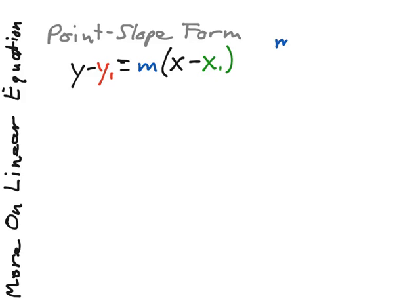y minus y₁ equals m times x minus x₁. Where in this form, we have a slope that is provided or found as m, and it passes through a given coordinate that is x₁ and y₁. So all you have to do is plug in the values into this form, and you're able to build up an equation in this point-slope form.